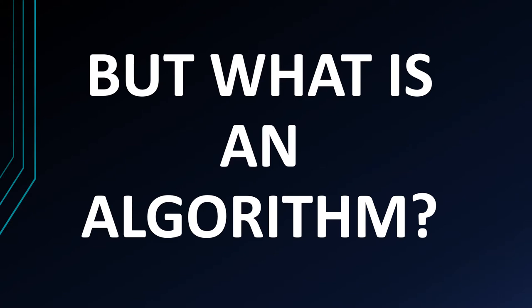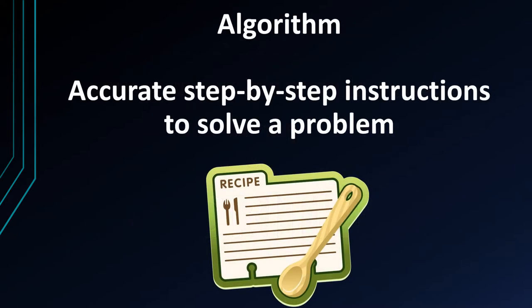You're all probably asking yourself the big question: what is an algorithm? An algorithm is a set of precise and accurate instructions which are written step by step. And they're written to solve a problem. So if you follow the instructions, you solve a problem without even thinking about it.